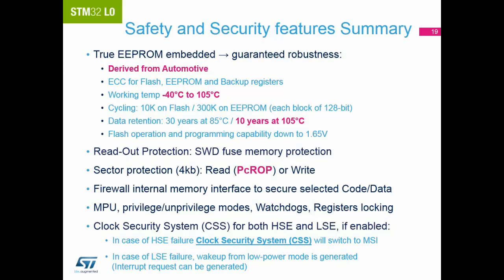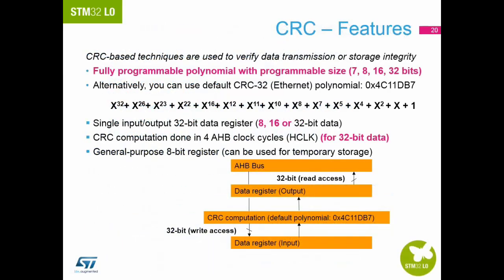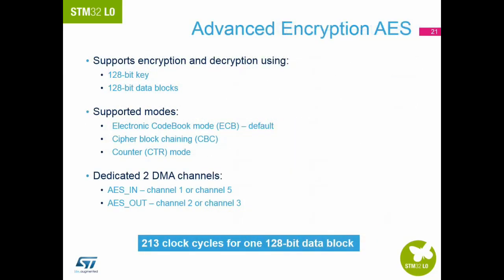As with all STM32s, the clock security system is available on the STM32 L0, just in case there are any issues with the external crystal. We have a CRC feature on the STM32 L0 which is fully programmable with varying bit sizes, or can use a default Ethernet polynomial. As this peripheral is connected to the AHB, it takes only four cycles for one 32-bit data word. The AES is available on the STM32 L0-6X devices, using a 128-bit key and supporting various modes of operation. DMA support is provided to encrypt blocks of data without the need of the CPU.